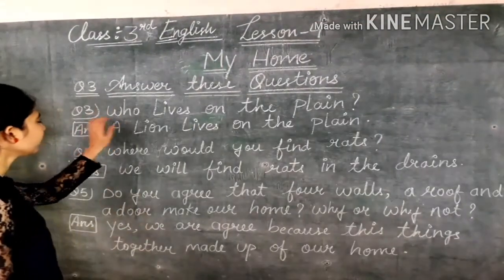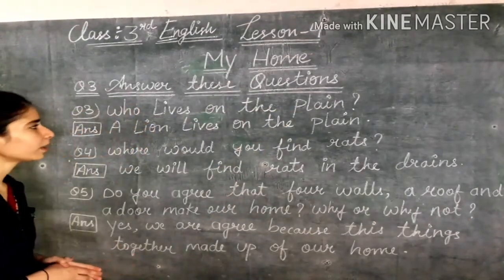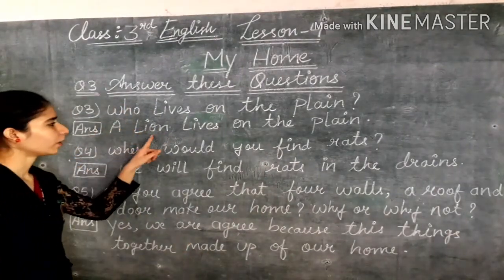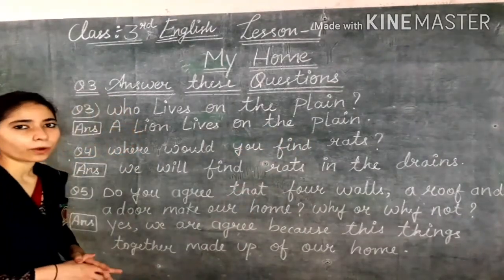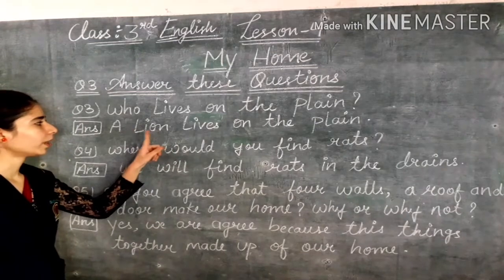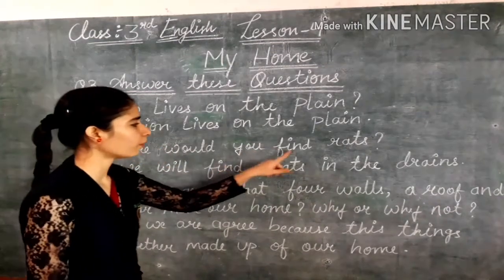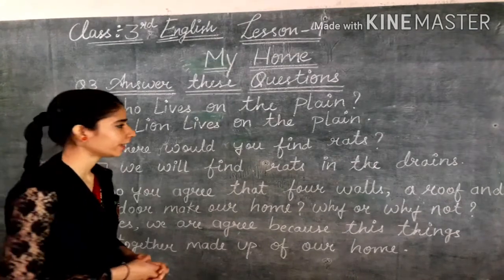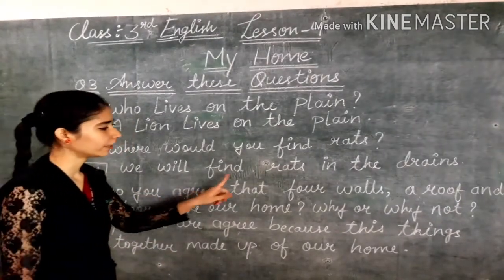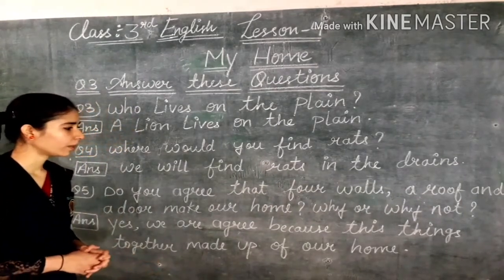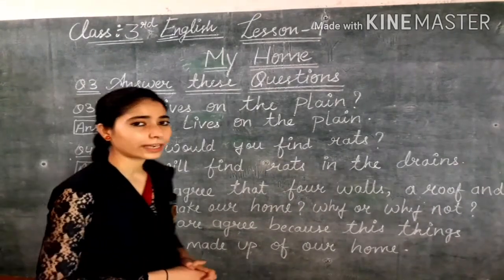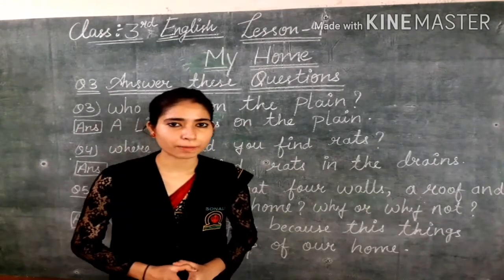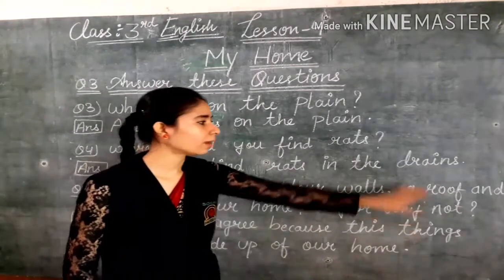Question number 3: Who lives on the plain? यानि मैदान पर कौन रहता है? Answer: A lion lives on the plain — L.I.O.N., lion. Question number 4: Where would you find rats? यानि आप चूहों को कहाँ पाएंगे? Answer: We will find rats in the drains. Drains means वो pipe जिसमें घर का गंदा पानी आता है।